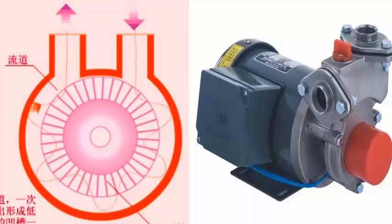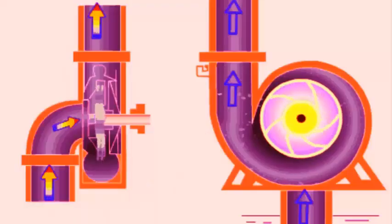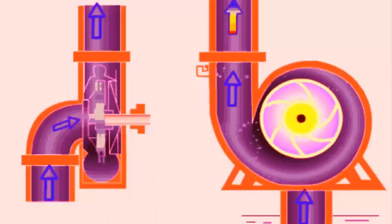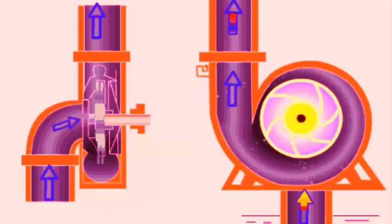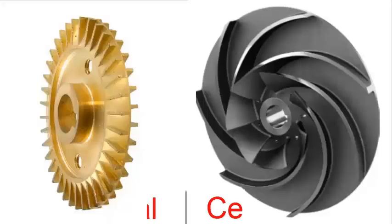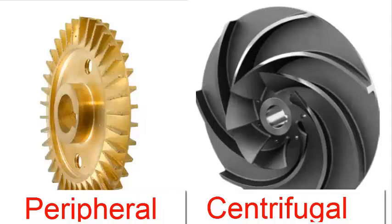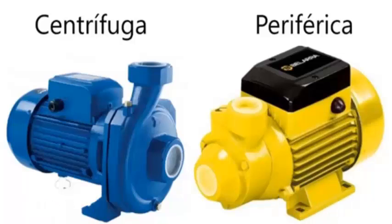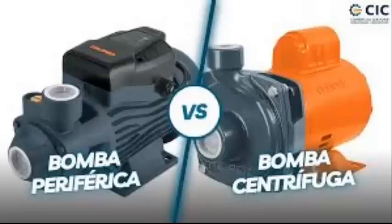5. Design and Size. Centrifugal pumps are generally larger and more complex in design. Peripheral pumps are more compact, lightweight, and simple. 6. Cost. Centrifugal pumps tend to be more expensive due to their larger size and manufacturing process. Peripheral pumps are more economical, ideal for domestic or small-scale applications.